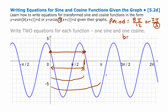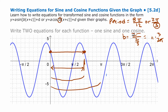If your period is two pi over three, your b value is three. If you're not sure, you can get the b value by doing two pi divided by the period. Two pi divided by two pi over three is the same as two pi times three over two pi. The two pi's cancel, giving you three. Either way, the b value in your equation has to be three.